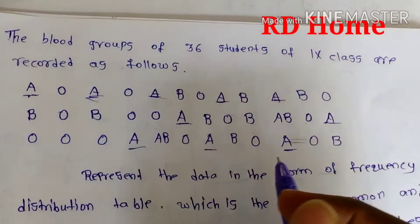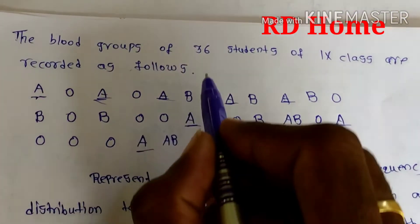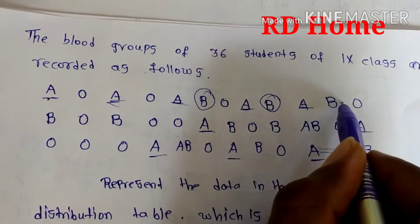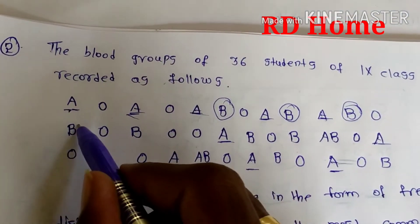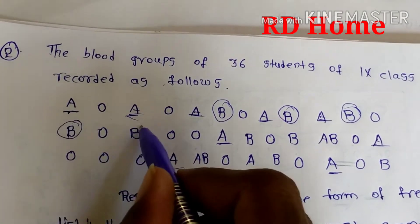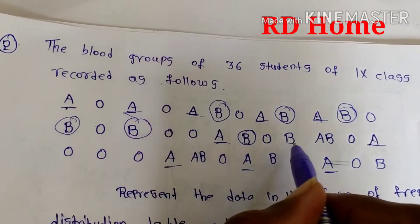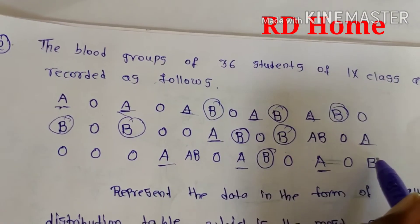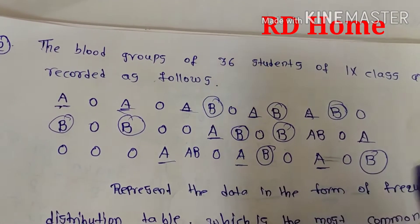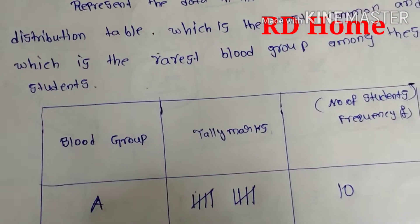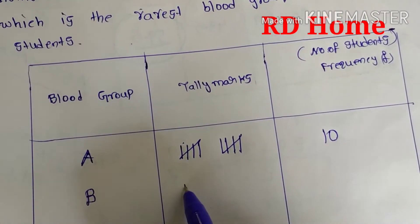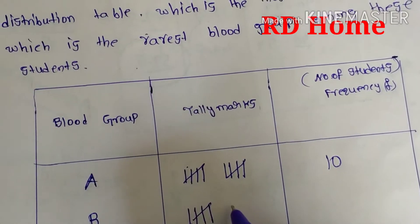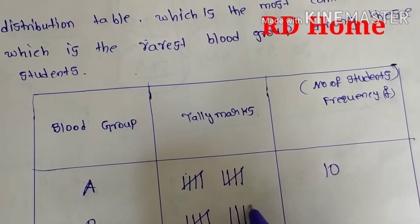In the same way, let's count blood group B. Counting the B entries: 1, 2, 3, 4, 5, 6, 7, 8, 9. Total 9 B's are there. You can write 9 tally marks: 1, 2, 3, 4, 5, 6, 7, 8, 9. The frequency for blood group B is 9.